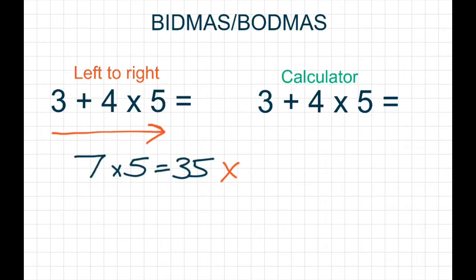And if I was to do it with a calculator, it'd be completely different. With a calculator, the calculator would do 4 times 5 first to get 20, and it would add only 3 after that to give us a total answer of 23. And this answer is correct.